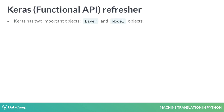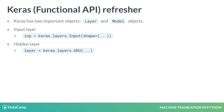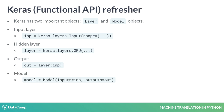Let's quickly revisit the Keras functional API. Keras has two important objects: layers and models. You can define an input layer using the input object. You can also define a hidden layer, like a GRU layer, using the Keras GRU object. Then you can get the output of that layer by passing INP to the layer. Finally, you can define a model object by specifying inputs and outputs of the model.